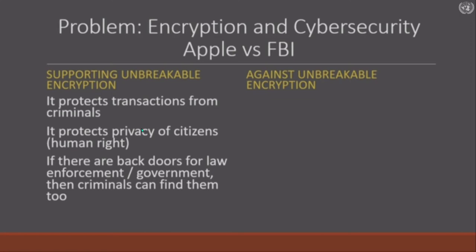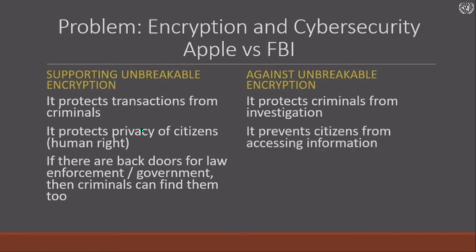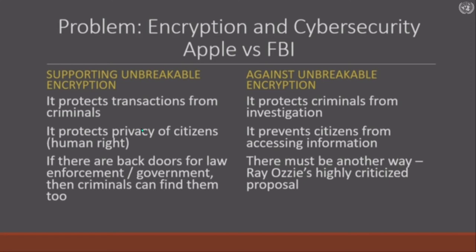On the other hand, my prosecutor friends are totally aghast by the idea of unbreakable encryption. To them, it protects criminals from investigation and prevents citizens from accessing information, and there must be another way. Many governments have asked whether there is a technical solution. Someone like Ray Ozzy actually suggested a very complex escrow method, where the back door key would be kept securely — though it's been highly criticized. But that question has bugged me for years: is there another way that we could balance this need?